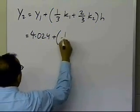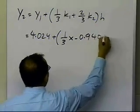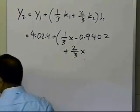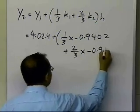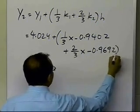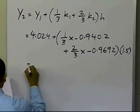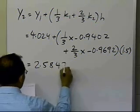plus 1/3 times the k1 value which we calculated as minus 0.9402, plus 2/3 times the value of k2 which we calculated as minus 0.9692, and h of course is 1.5. This value here turns out to be 2.5847.